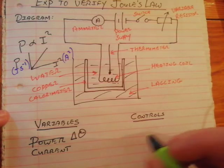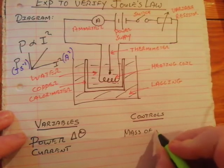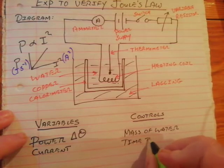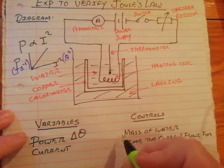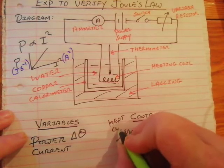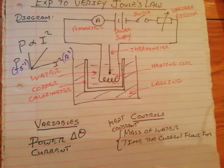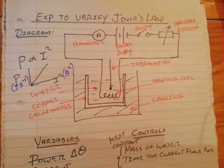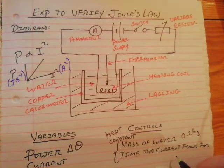This is where our controls come in. Two things must be kept constant in this experiment: the mass of the water and the time the current flows for. These must at all times be kept constant, because we want to see what effect the current has on the rise in temperature. So when the Joule's Law experiment is done, you put in a fixed mass of water — say 0.2 kilograms — and allow the current to flow for a fixed time, say 5 minutes or 300 seconds.